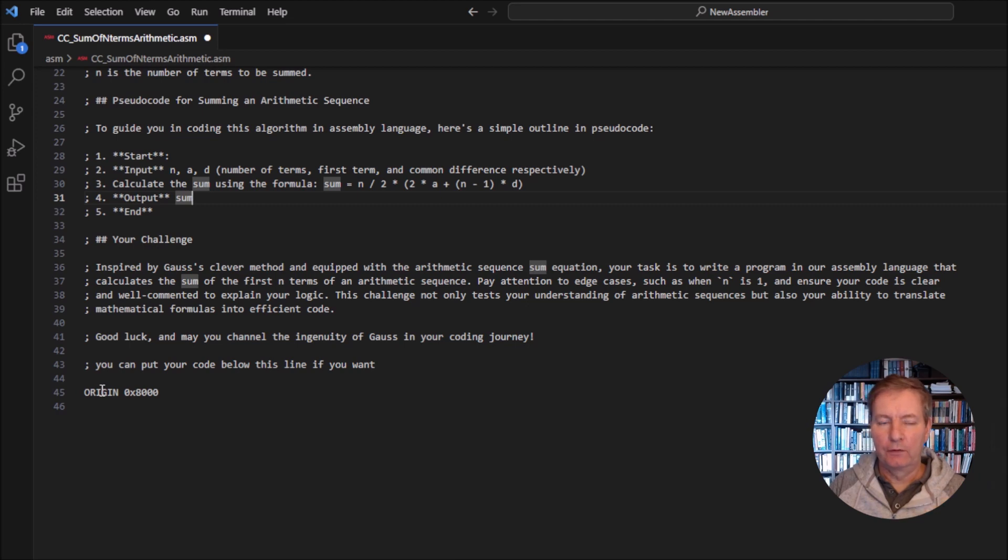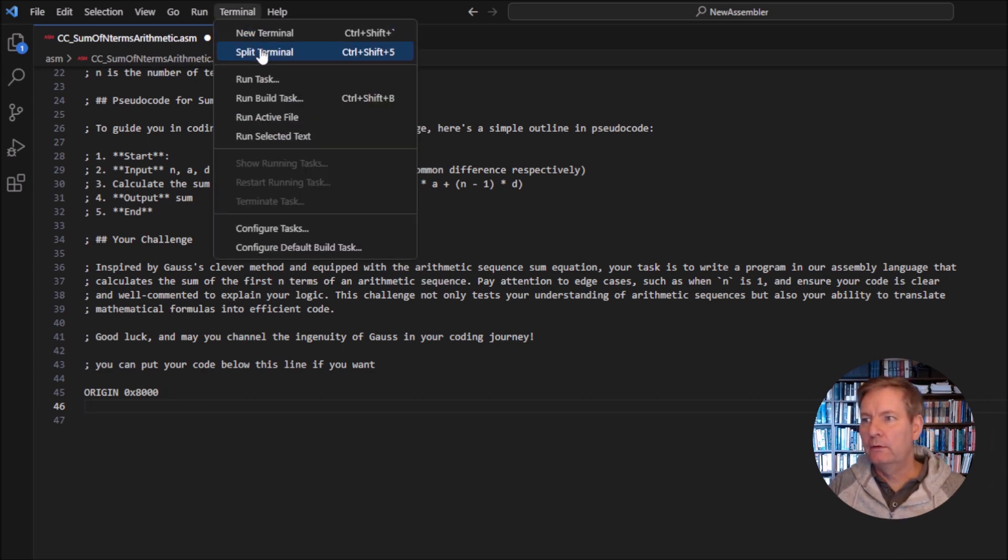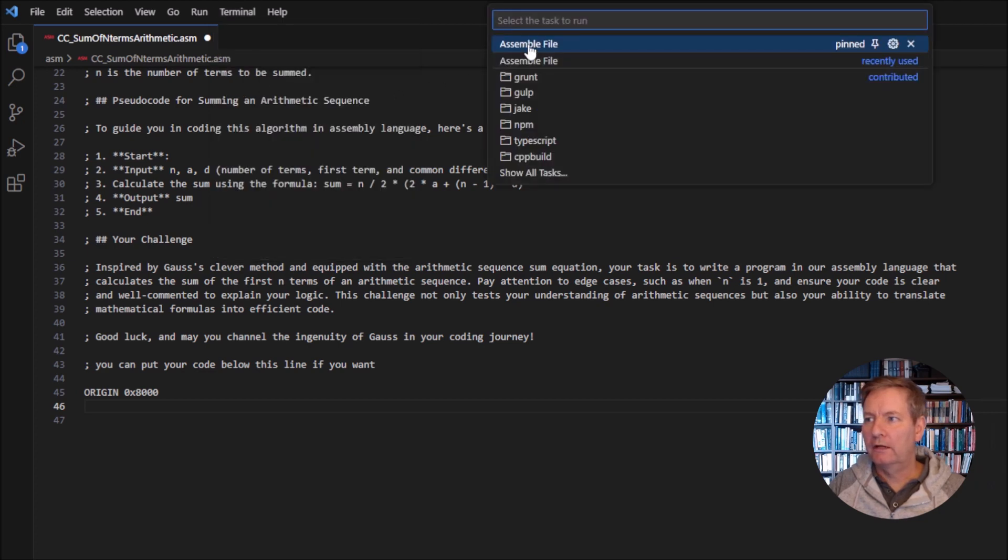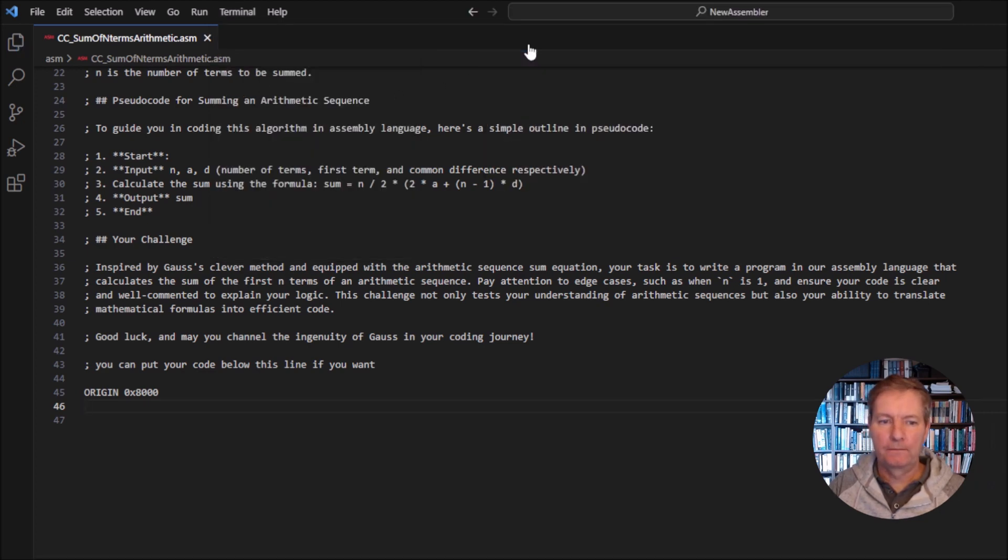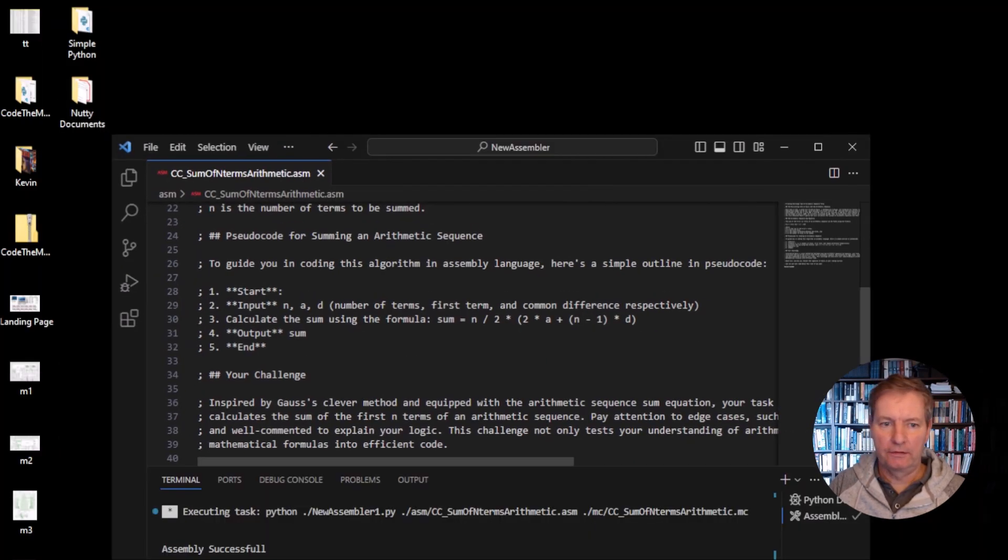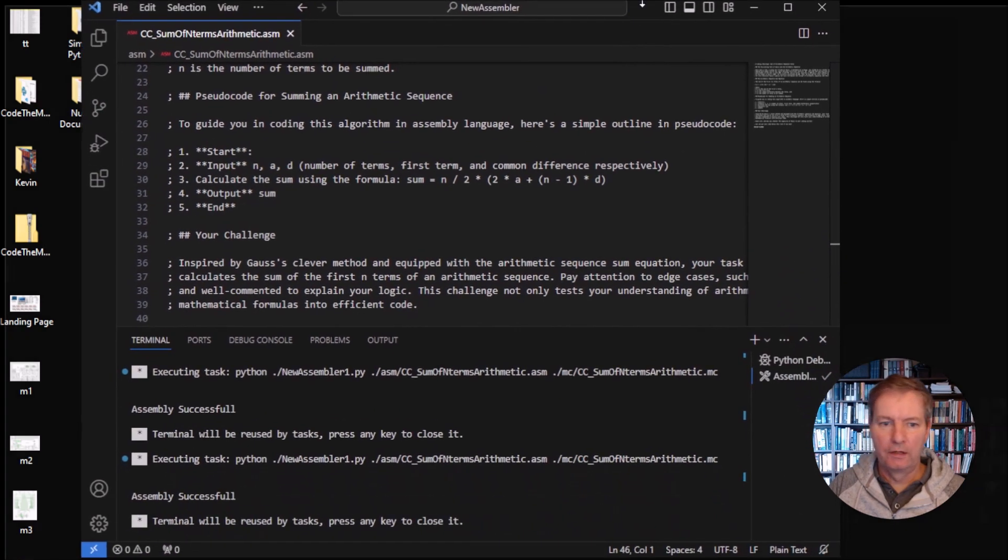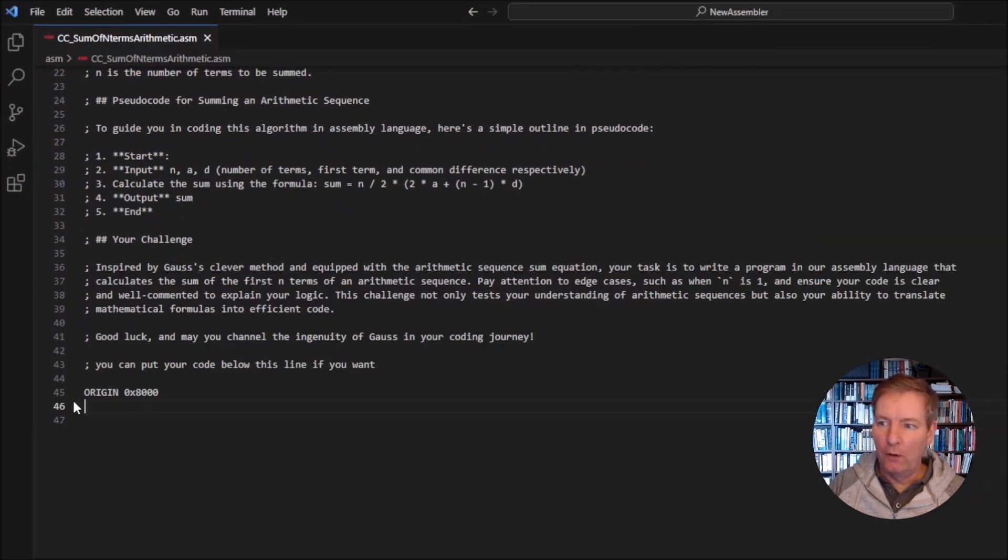So the very first line is always origin 0x8000. So you can go on from that point there. And as you work through each line of your code, I would suggest you maybe go into the terminal and you can run task and you can assemble it. So at the bottom here, it actually comes up saying assembly successful because we haven't actually generated it now as such. All of these are just comments. So that is the coding challenge.